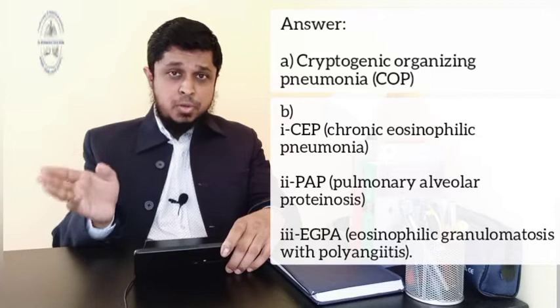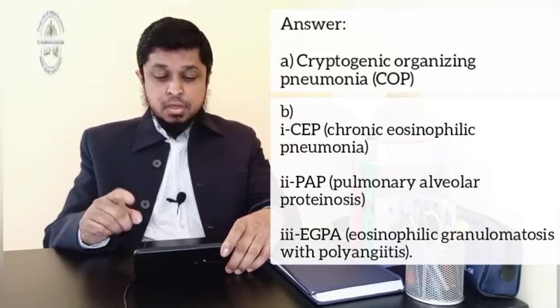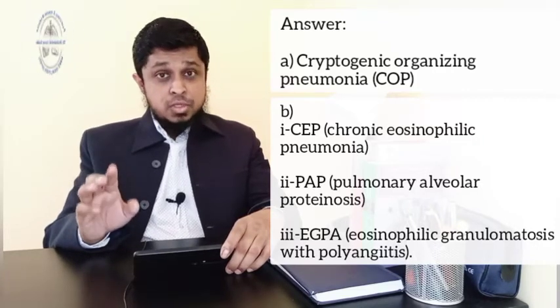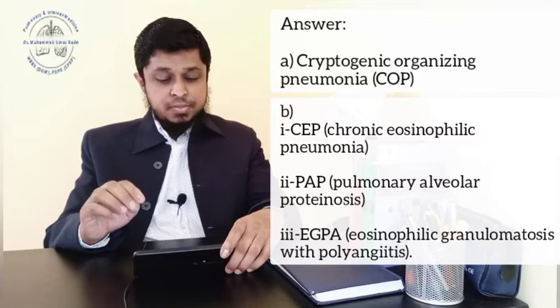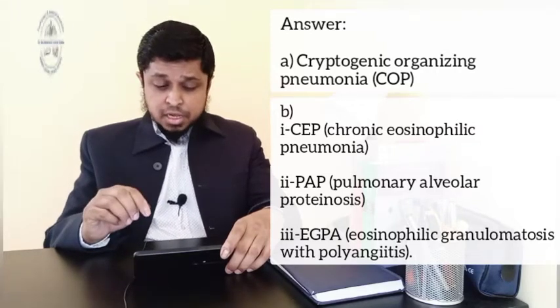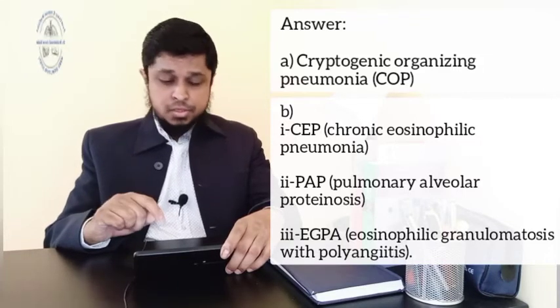migratory subpleural alveolar opacities, which are fleeting shadows. The fleeting shadows are also seen in granulomatosis with polyangiitis, which is also called Churg-Strauss syndrome. So these are the differential diagnoses which we have to write in the part B answer.